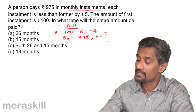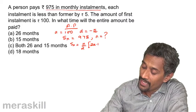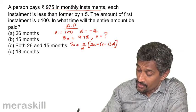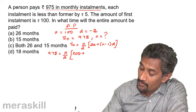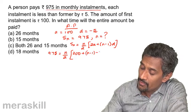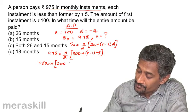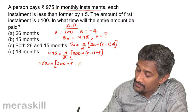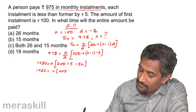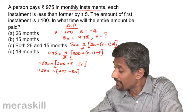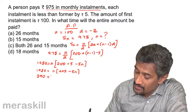The total to be paid is ₹975, so S_n = 975. Using the AP sum formula: 975 = (n/2)[2(100) + (n − 1)(−5)]. This gives 1950 = n[200 − 5(n − 1)] = n(205 − 5n). Dividing throughout by 5: 390 = n(41 − n).